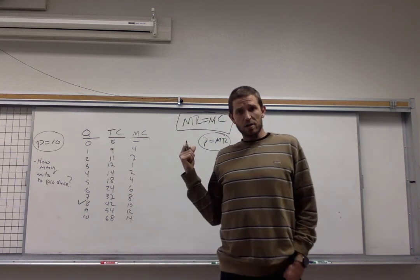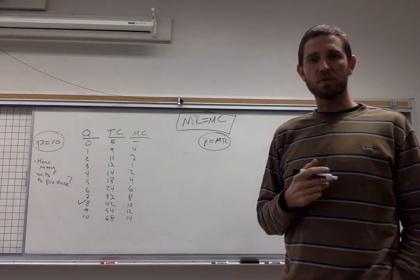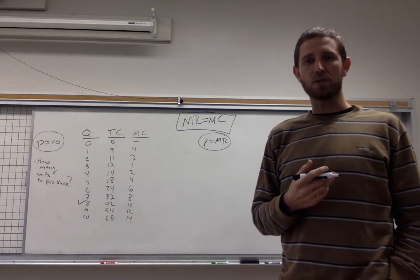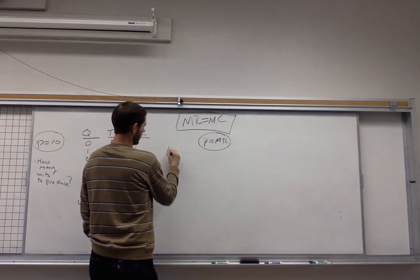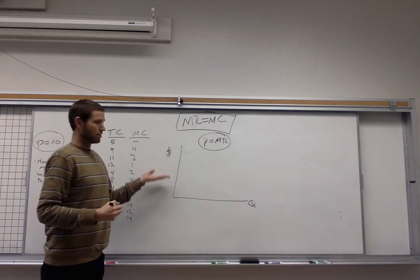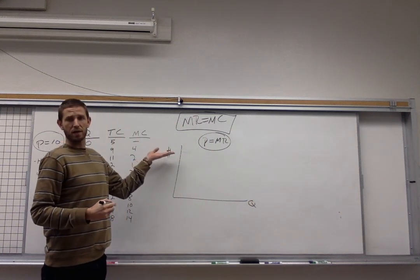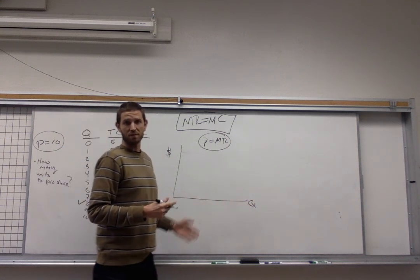We've got a setup right here that's doing this analysis with a table. You should also be comfortable doing these types of problems with graphs. Let me put that on the board here really quickly. So with a perfectly competitive firm we're going to put dollars on that vertical axis and use that to measure both revenue and cost. The quantity we're going to measure horizontally. It's how much stuff the firm is producing.